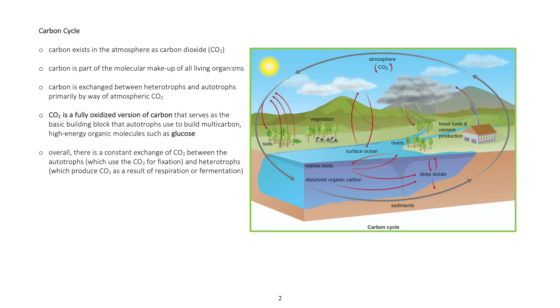Carbon dioxide is a fully oxidized version of carbon that serves as the basic building block that autotrophs use to build multi-carbon, high-energy organic molecules such as glucose.